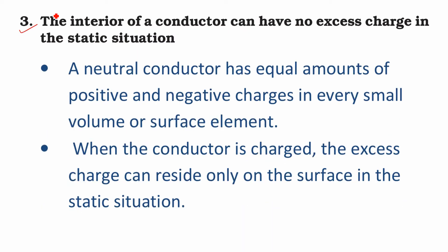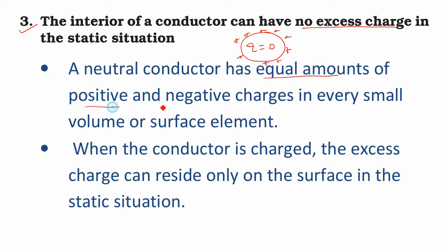Third characteristic to remember: the interior of the conductor can have no excess charge. Inside the conductor, charge is also zero. Charge will only reside on the surface of the conductor. Whenever you are giving charge to the conductor it will reside on the outer surface. A neutral conductor has equal amounts of positive and negative charge — number of electrons and protons are equal. When the conductor is charged, the excess charge can reside only on the surface of the conductor in the static situation.